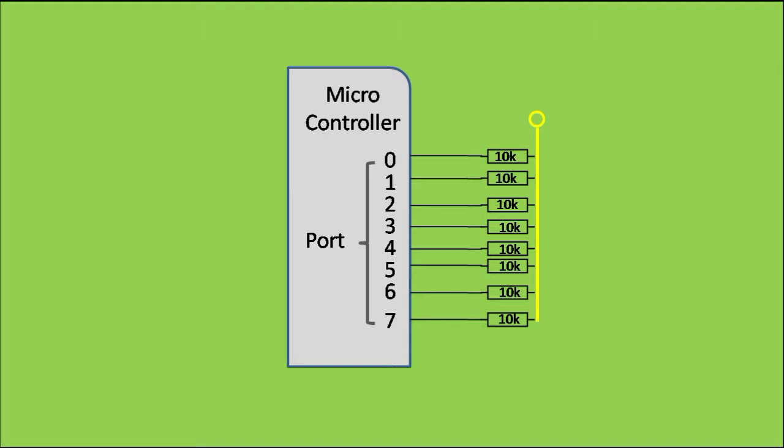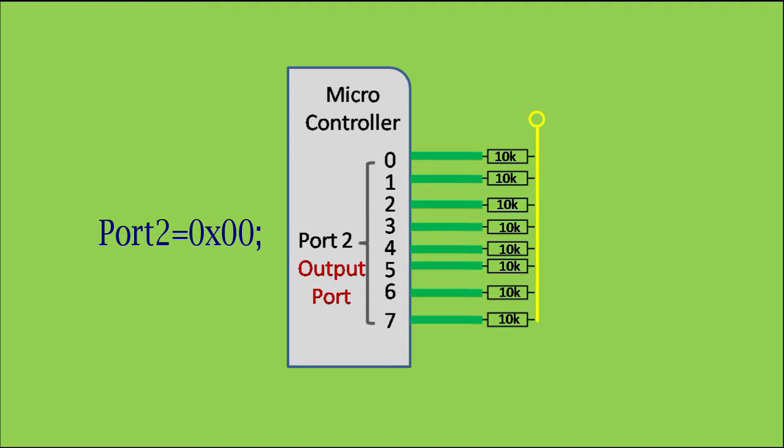On the programming side, we have to configure the port as an output port. Next, write a hex value of 0x00 to the port which will connect all resistors to ground, which will give us 0V at the common point.